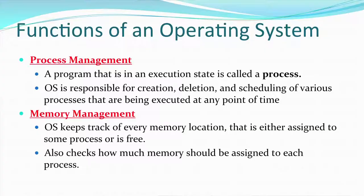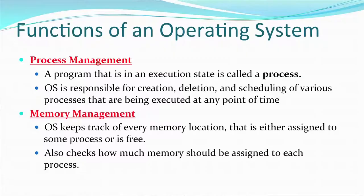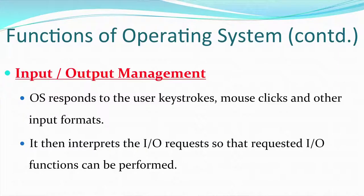At any point in time, a single process or multiple processes might be running on the system. The next function is memory management. Computers are meant to store data, so memory has to be allocated. The operating system keeps track of every memory location that is either assigned or to be used by any device for job completion. It also checks how much memory should be assigned to each process for its successful completion.